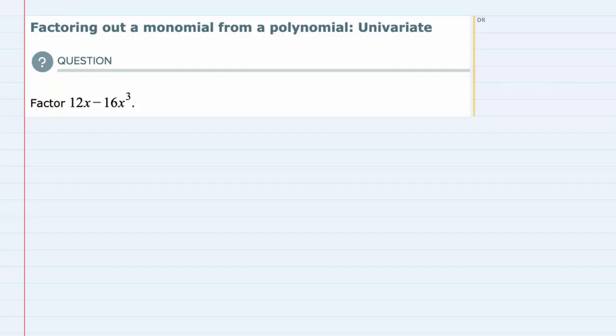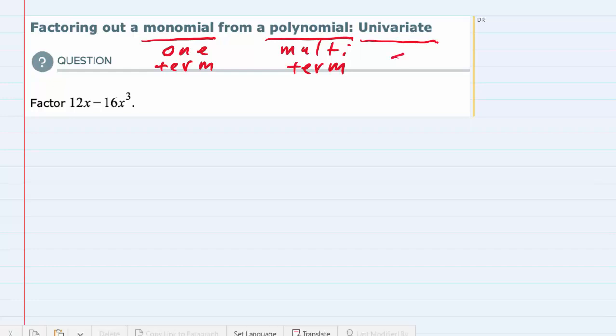In this video we'll be looking at the problem set called factoring out a monomial from a polynomial univariate. So first, just to look at those terms: monomial means one term, so we are factoring out one term from a polynomial which means multiple terms. And the polynomial will be univariate, meaning there's only one variable, which in this case is our x.